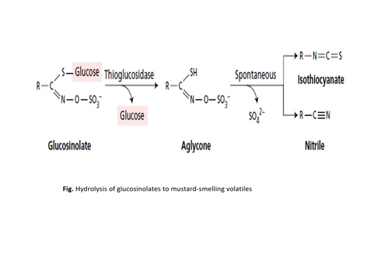R represents various alkyl or aryl substituents. For example, if R is propene, the compound is sinigrin, a major glucosinolate of black mustard seeds and horseradish roots.